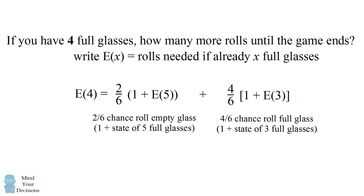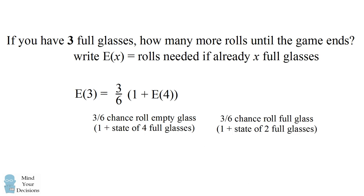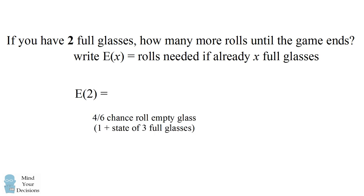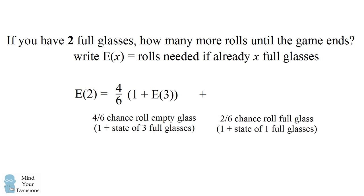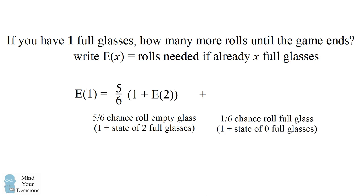Now we figure out what happens with 3 full glasses. Similarly, there's a 3/6 chance we go to 4 full glasses and a 3/6 chance we go to 2 full glasses. For 2 full glasses, another equation describes transitions to 3 full or 1 full glass. With 1 full glass, there's a 5/6 chance we roll an empty glass and reach 2 full glasses, or a 1/6 chance we roll the full glass, drink it, and go to 0 full glasses.